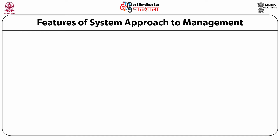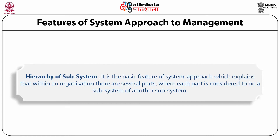Features of system approach to management. The first is hierarchy of subsystems. This is a basic feature which explains that within an organization there are several parts, each considered to be a subsystem of another subsystem. For example, in the education system there are several departments like arts, science, and commerce in a college. An institute is a part of the university, and the university is a part of the education system — forming a complete hierarchy of subsystems.